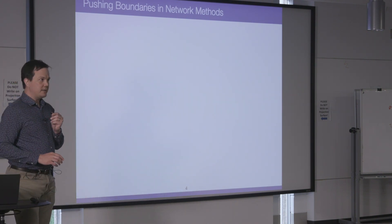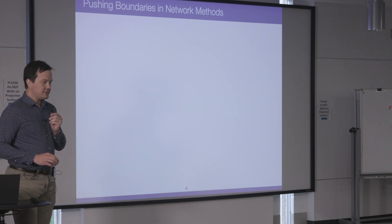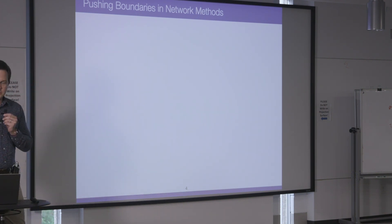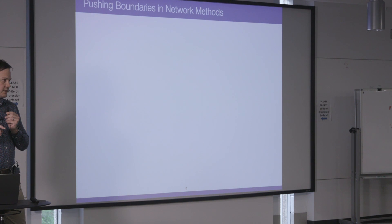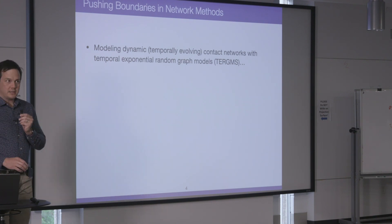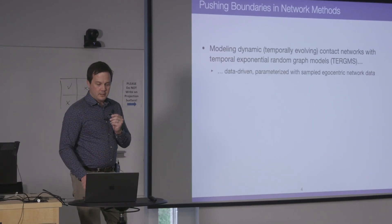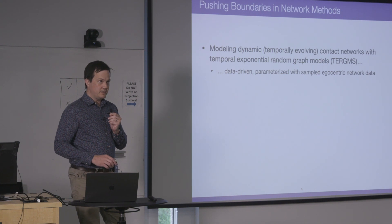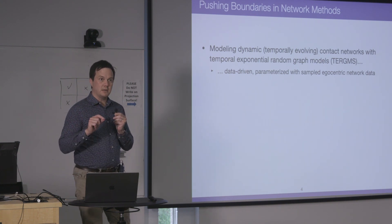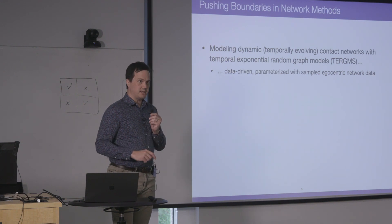I wanted to highlight what EpiModel does in terms of the social network analysis and network science boundaries and where we're pushing what we're able to do. First, we're modeling dynamic contact networks — temporally evolving networks with TERGMs, temporal ERGMs. They are data-driven agent-based models of disease, but highly parameterized with primary and secondary data.